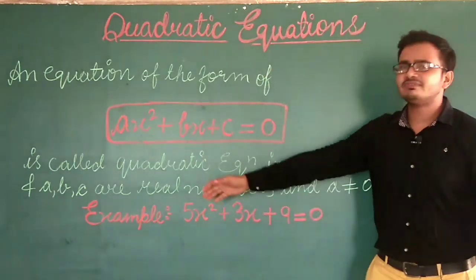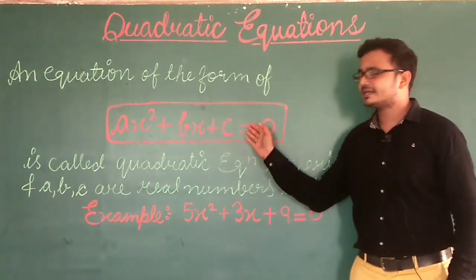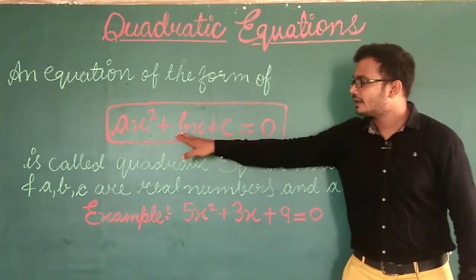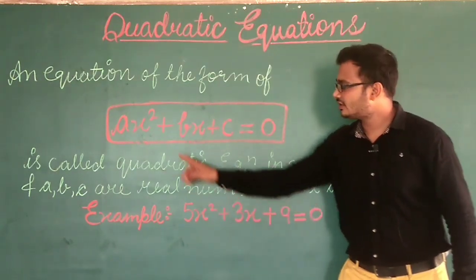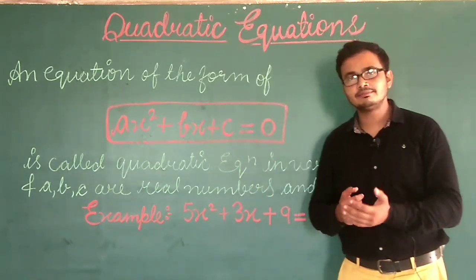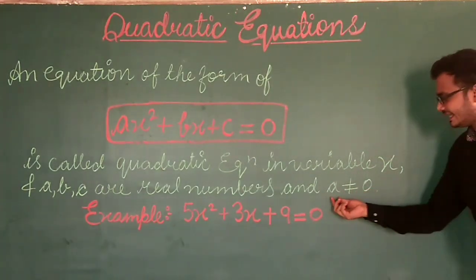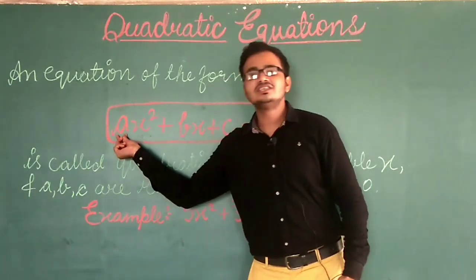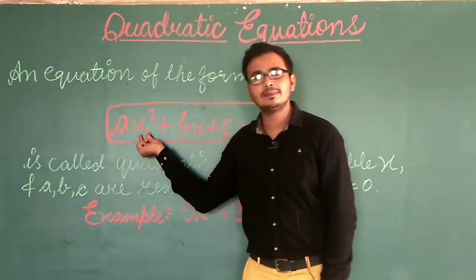So there is one example here: 5X square plus 3X plus 9 is equal to 0. If we compare this equation to the standard form, AX square means 5X square, BX means 3X, and C means 9. Here also your variable is X, but A, B, C's values vary — they will be numbers.